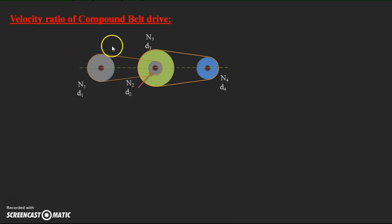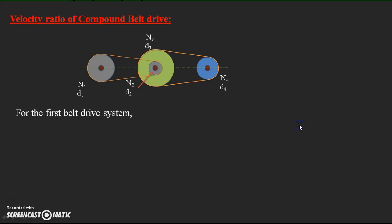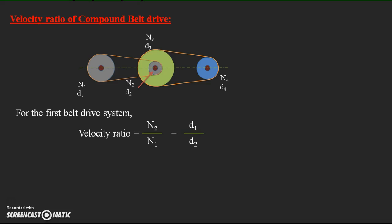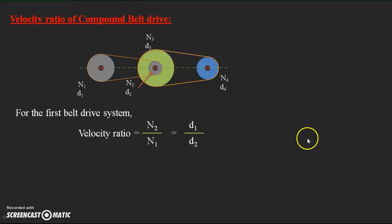In this compound belt drive system, consider each section as a simple belt drive. For the first belt drive — driver and follower — the velocity ratio is N2 by N1 equal to D1 by D2, as derived for the simple belt drive system.